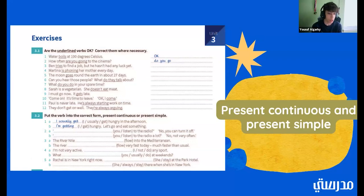For number three, there is something we do need to change because Ben tries to find a job is not correct. It should be Ben is trying to find a job. So number three would be Ben is trying to find a job. Number four, Martina is phoning her mother every day. Yeah, that one would be Martina phones her mother every day. Good. Five, the moon goes around the earth in about 27 days. Is that one OK? That one is OK. Good.